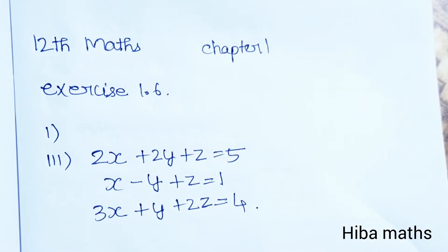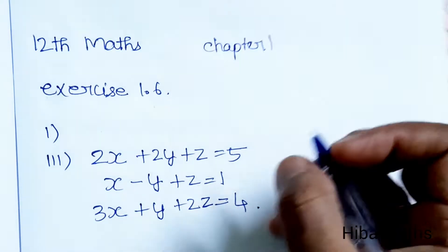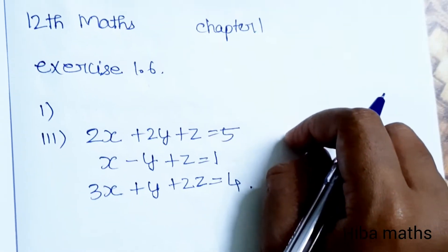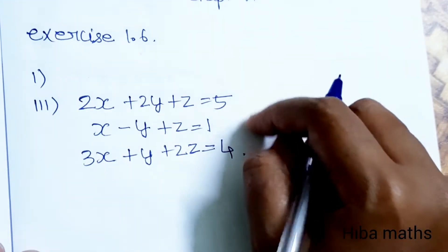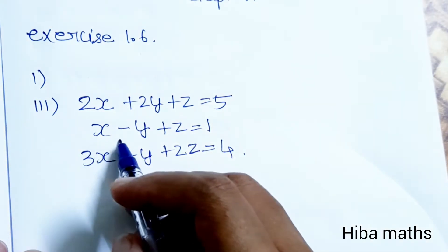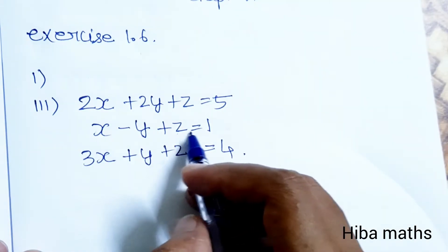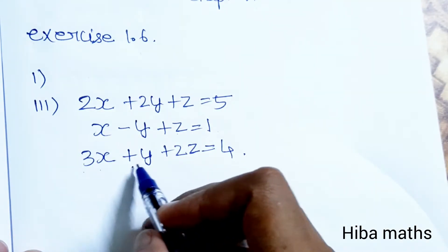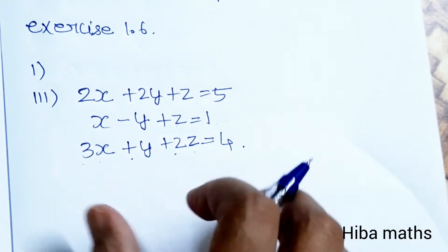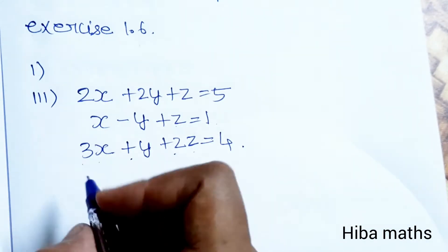Hello students, welcome to Hibamax 12 standard, Chapter 1, Exercise 1.6. First question: test for consistency and solve the equations, third subdivision. The question is: 2x + 2y + z = 5, x - y + z = 1, 3x + y + 2z = 4. This is the augmented matrix.